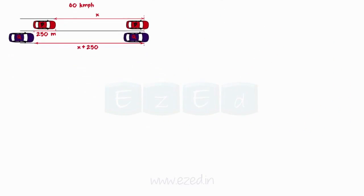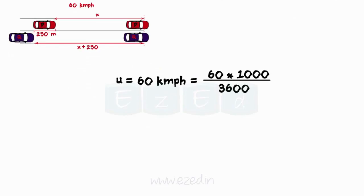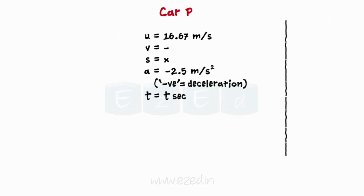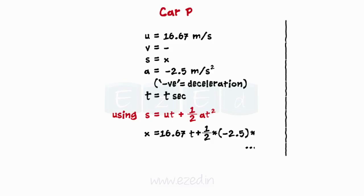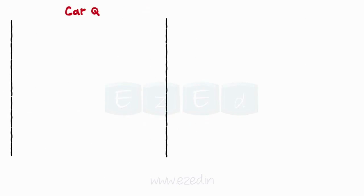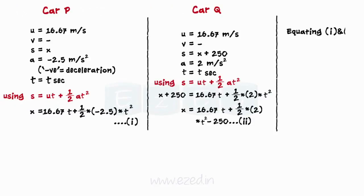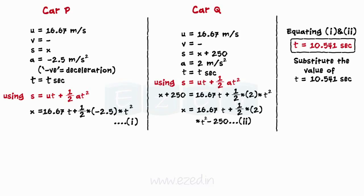Initial velocity of car P and Q is 60 km per hour, which on evaluating gives 16.67 meters per second. Consider motion of car P — write whatever is given for car P. As the motion shows uniform acceleration, use the equation for uniform acceleration. On substituting the respective values, we get equation 1. Similarly, write all conditions for car Q. On using the uniform acceleration equation and substituting values, we get equation 2. On solving equations 1 and 2, we get the value of time, and on substituting that value into either equation, we get the point at which car Q will overtake car P.